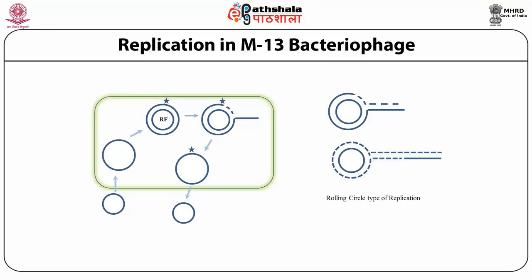These linear copies can be converted to double-stranded circular molecules through the following process. First, the initiation protein makes an anchor nick to terminate synthesis of the first leading strand. RNA polymerase and DNA polymerase III then replicate the single-strand origin SSO DNA to form an anchor double-stranded circle. DNA polymerase I removes the primer, replacing it with DNA, and DNA ligase joins the ends to form the double-stranded circular DNA.